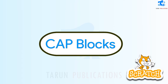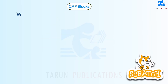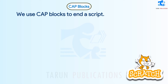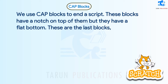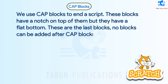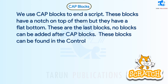Cap Blocks are used to end the script. These blocks have a notch on top but a flat bottom, making them the last blocks in a sequence. No blocks can be added after cap blocks, and they can be found in the control blocks category.